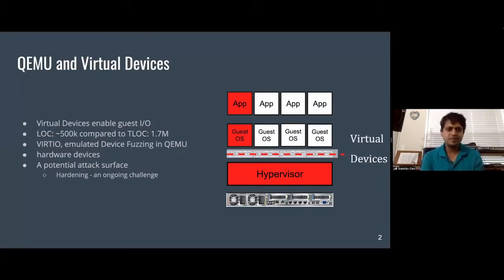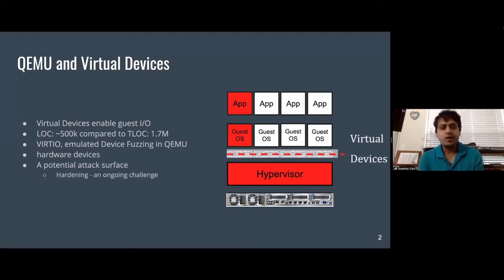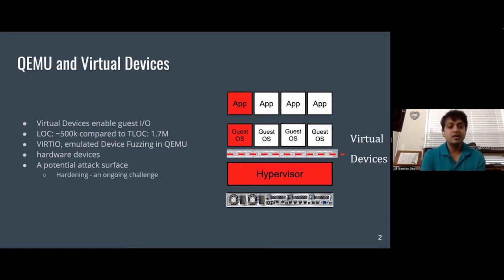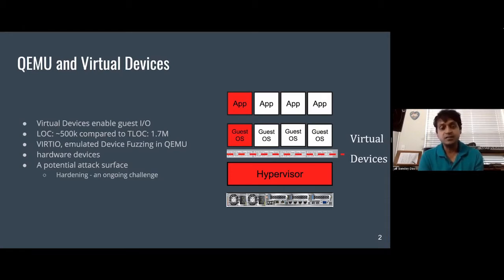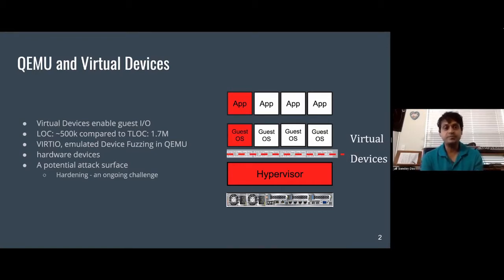Before we talk about fuzzing, the first slide talks a little bit about QEMU and how we decided on what would be a good interface to fuzz. QEMU does not have a shortage of interesting interfaces — it is a vast emulator. There are millions of interfaces through which guests interact.